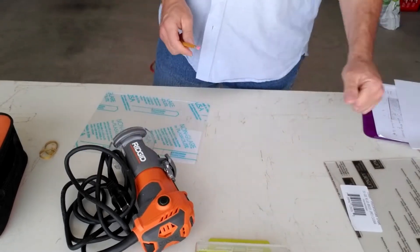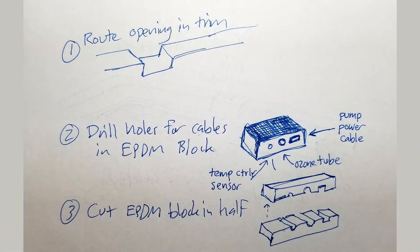The idea is that we are going to put a groove into the plastic trim of the chest freezer towards the back. Take two pieces of that EPDM and put a small groove in there for these various tubes and cables to run through. We've got our ozone tube, the power cord for the pump, and the sensor wire for the temperature controller.